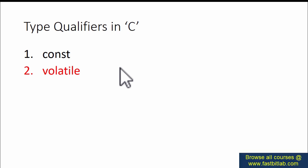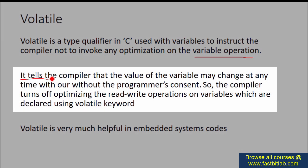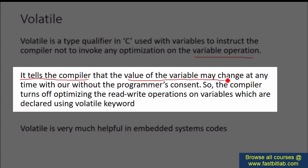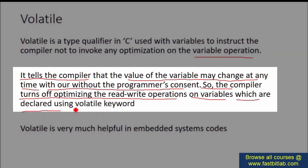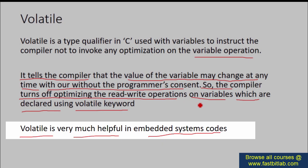Let's understand our next type qualifier: volatile. Volatile is a type qualifier in C used with variables to instruct the compiler not to invoke any optimization on the variable operation — either read or write. It tells the compiler that the value of the variable may change at any time with or without the programmer's consent, so the compiler turns off optimizing read-write operations on variables declared using the volatile keyword. Volatile is very helpful in embedded systems code to reduce bugs.